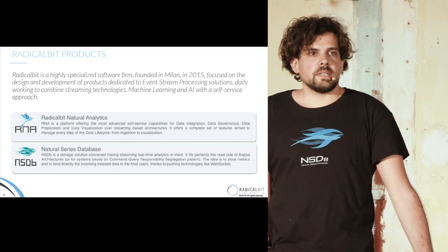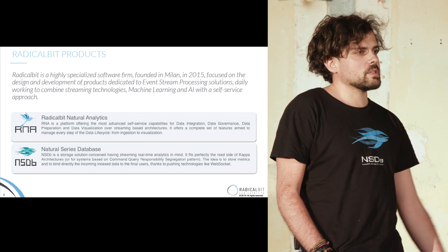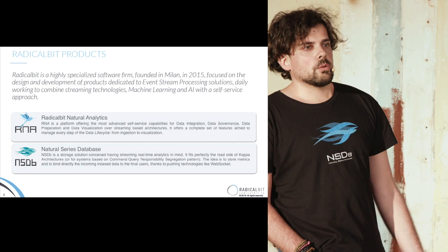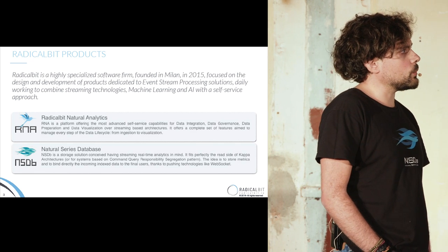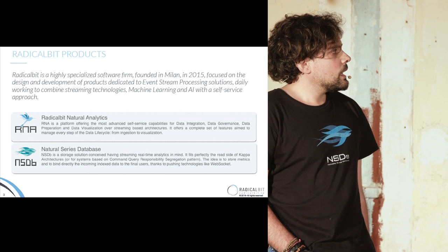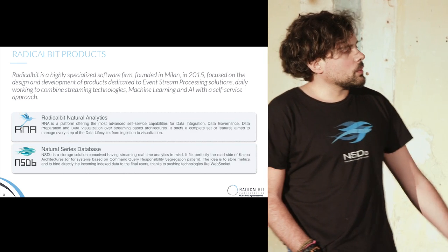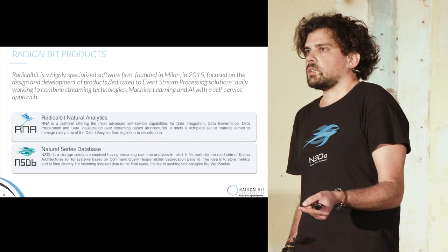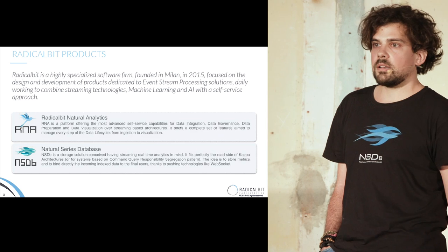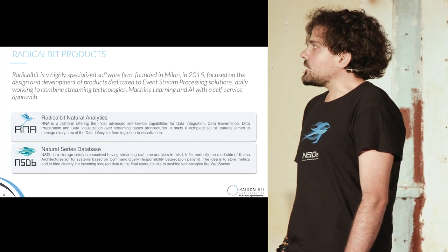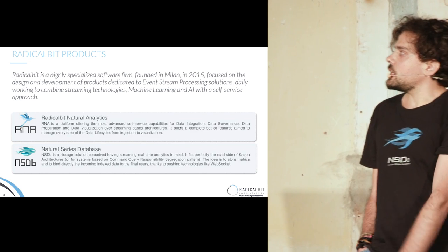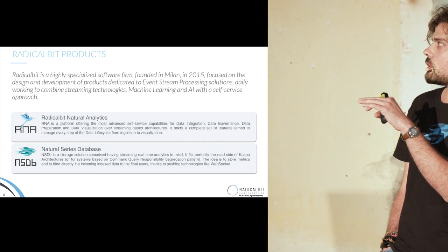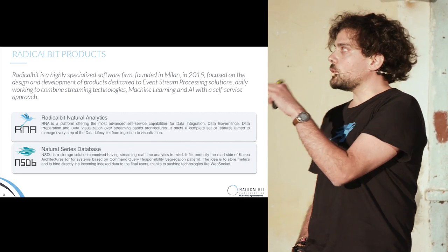The first product is RadicalBit Natural Analytics, which is a self-service platform aimed to let users implement their own analytics framework. We do it with streaming technologies. The second product we build is NSDB, which is a time series database. We built it on top of Scala and Akka, and it is focused on guaranteeing a quick view on streaming analytics for the view layer.